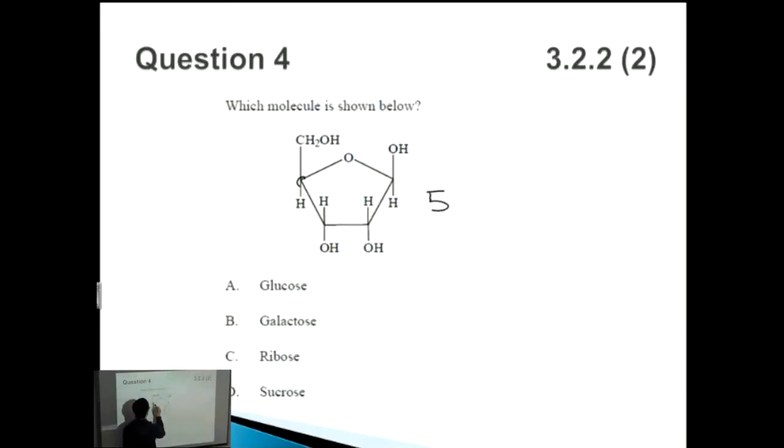How many hydrogens? One, two, three, four, five, six, seven, eight, nine, ten. So ten hydrogens.